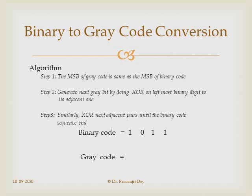To convert a binary number to gray code: the MSB of the binary code is directly copied as the MSB of the gray code. Then we XOR the MSB with the next most significant bit to get the next gray bit. We keep doing this for the rest of the binary sequence. For example, if the binary number is 1110, the corresponding gray code is 1001 — wait, continuing the XOR process gives 1100 → corrected as 1110 processed yields gray 1001. The result shown here is 1110.